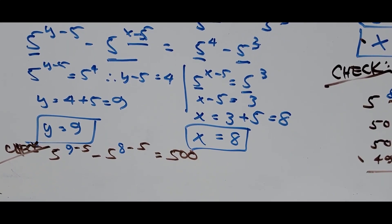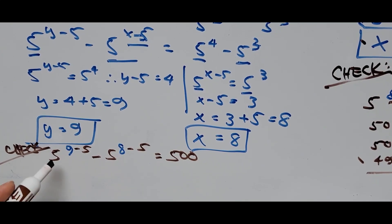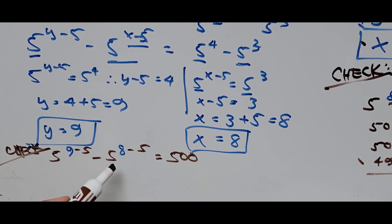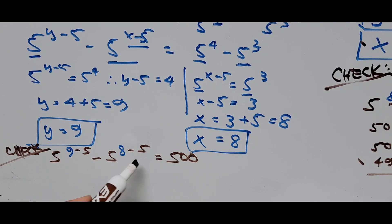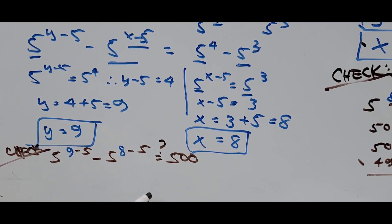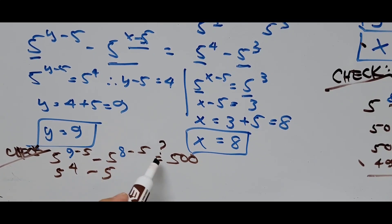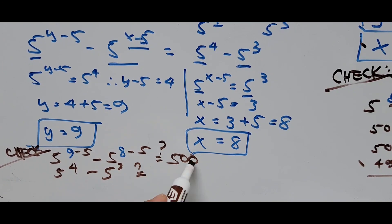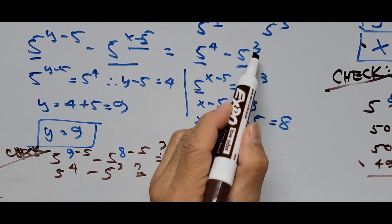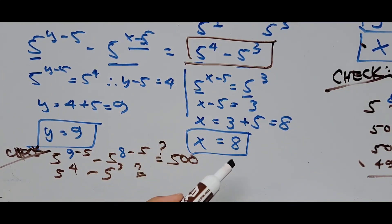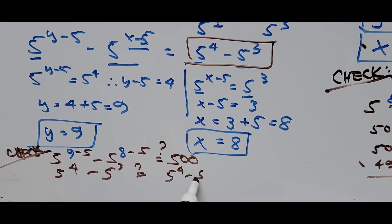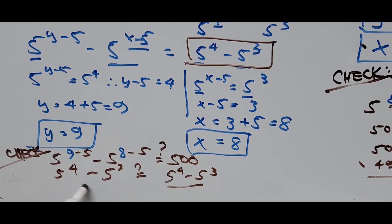Checking this answer by substituting y = 9 and x = 8 into the original equation: 5^(9 minus 5) minus 5^(8 minus 5) equals 5^4 minus 5^3 equals 625 minus 125 equals 500. This confirms the values y = 9 and x = 8 are correct.